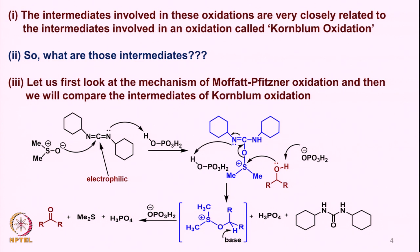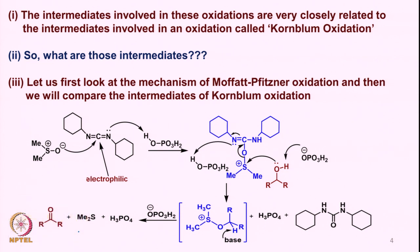The intermediates involved in these kinds of oxidations are very closely related to another oxidation known as Kornblum oxidation. We will look at those intermediates a bit later, but first let us see how the mechanism of the Moffatt-Pfitzner oxidation and very closely the Barton oxidation have been considered.